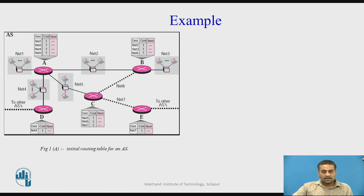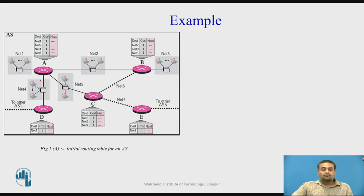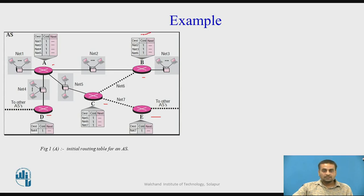Let's see how distance vector routing updates the table with a simple example. Here we have one autonomous system, as distance vector routing is an interior protocol which handles routing inside this autonomous system. This autonomous system has five routers: A, B, C, D, and E. Each router has a routing table filled with entries upon booting — initially containing only directly connected networks.